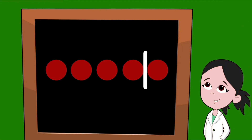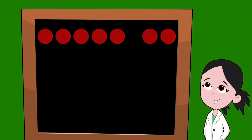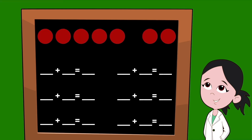Let's get started with the number seven. Starting out with our seven dots, and we're going to have six partners. To get started, let's go ahead and separate that first dot. So we should have one dot on the left, which means our first partner is going to be the number one. On the right side of our line, we have six dots, so our second partner is the number six. One plus six equals seven.